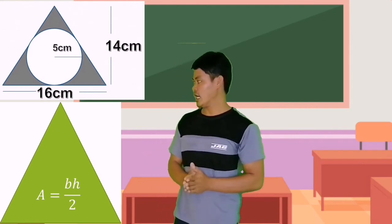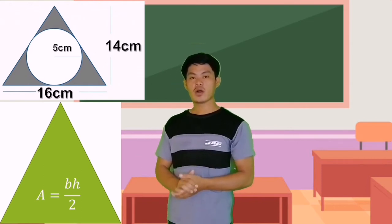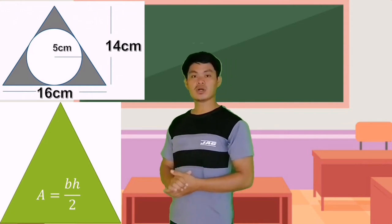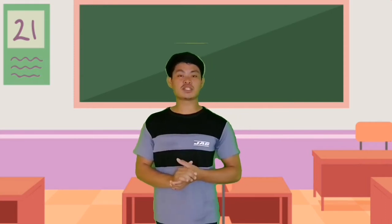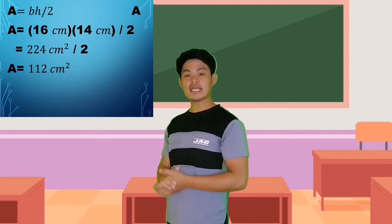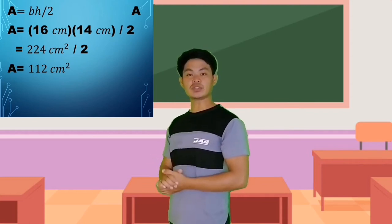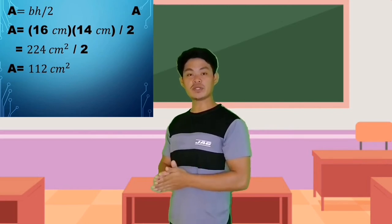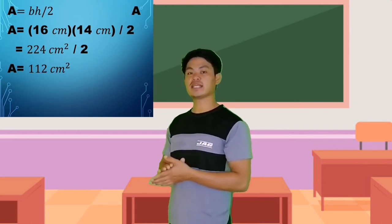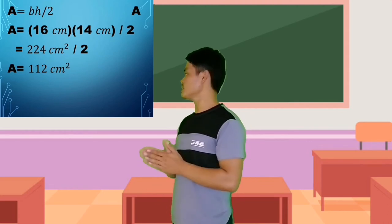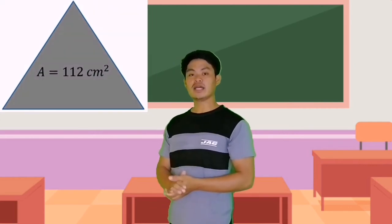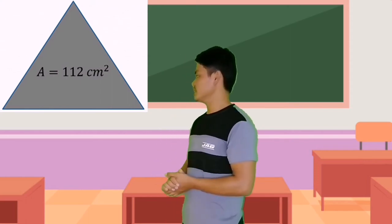For shape A, the triangle, base B is equal to 16 cm and height H is equal to 14 cm. Substituting into the formula: area equals 16 cm times 14 cm divided by 2. 16 times 14 equals 224 cm squared, divided by 2 equals 112 cm squared. So the area of the triangle is 112 cm squared.